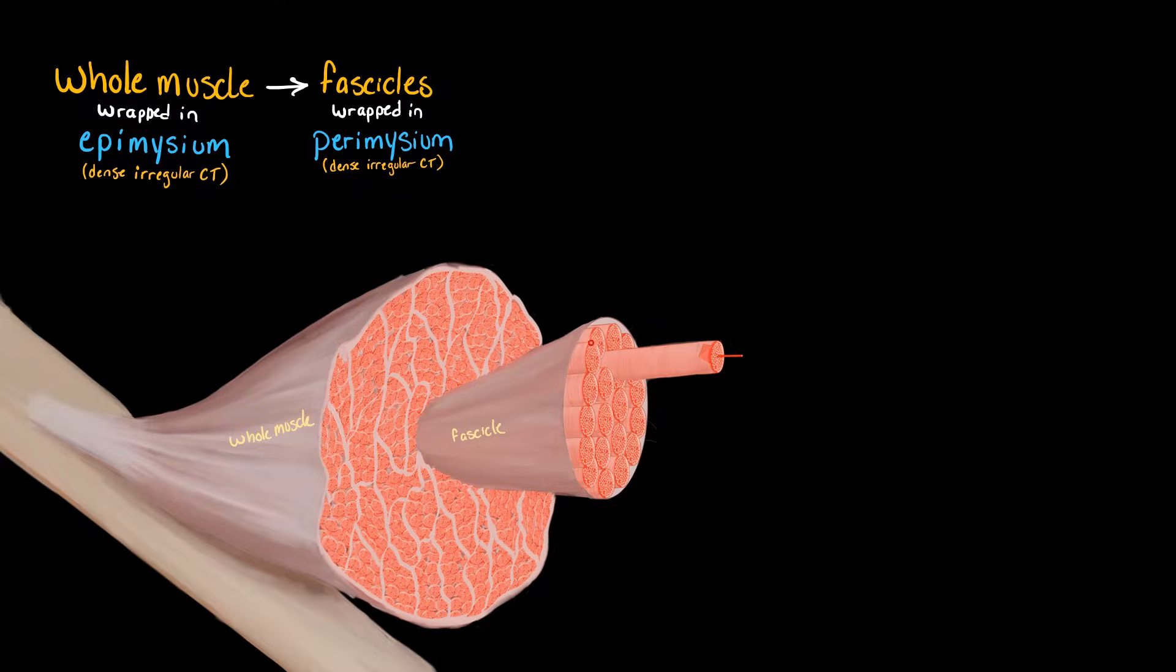The fascicles are full of their own individual bundles, and those bundles are the muscle fibers, which are actually muscle cells. You also might hear them called myocytes, because myo means muscle, site means cell. And they are wrapped in a layer of connective tissue called the endomysium, which is a regular connective tissue. So it's a loose connective tissue, whereas the other ones are dense.